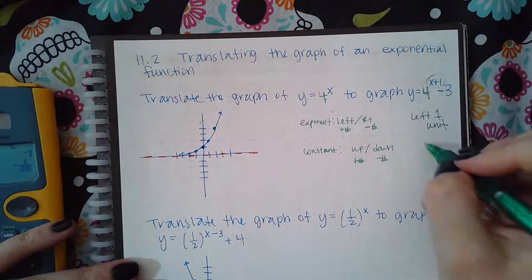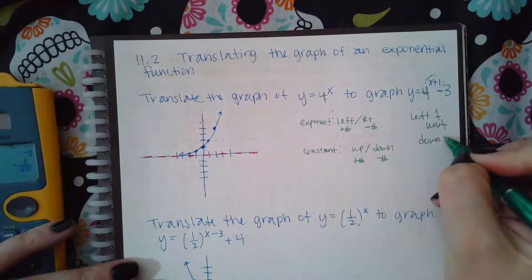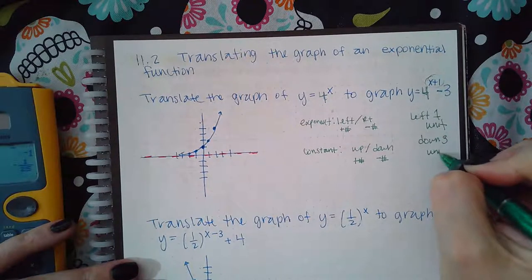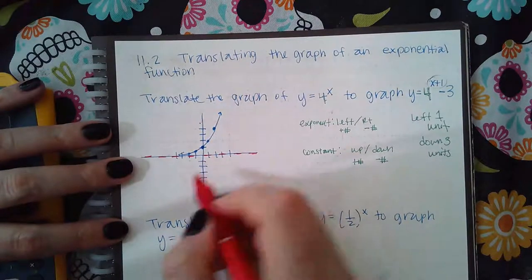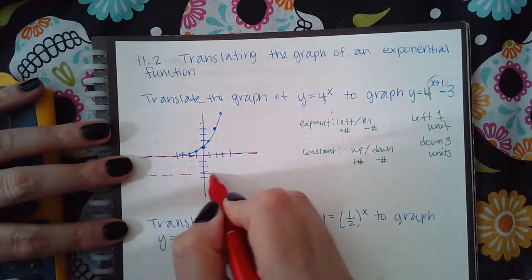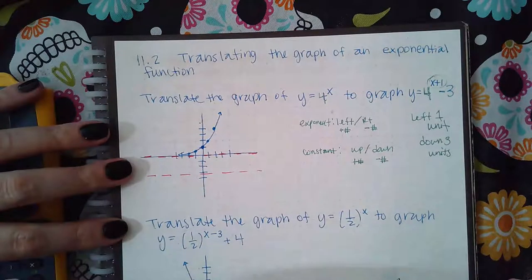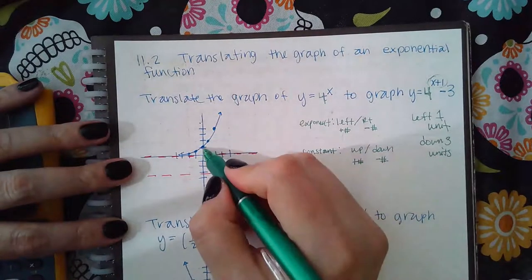I also need to be shifting it down three units, so that will move this down one, two, three. The new asymptote will be here.